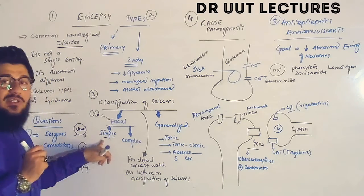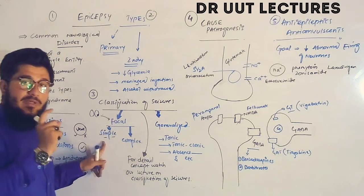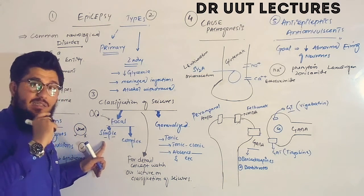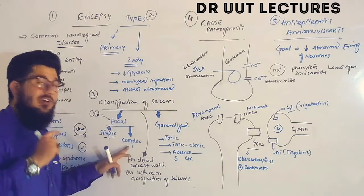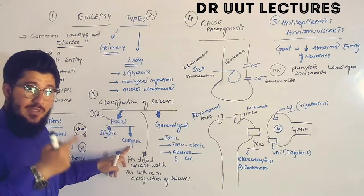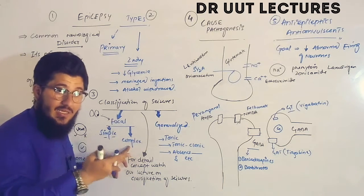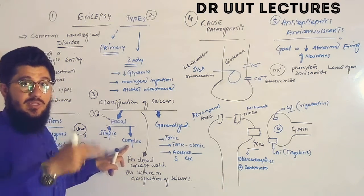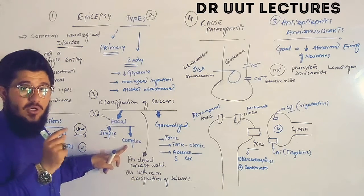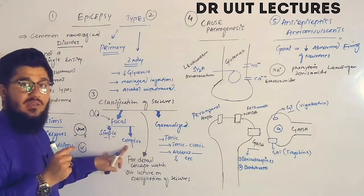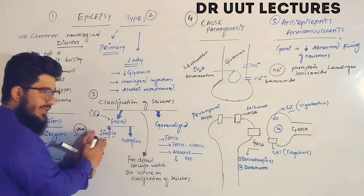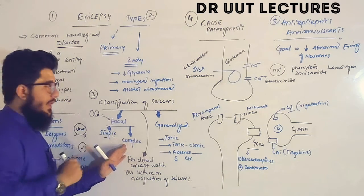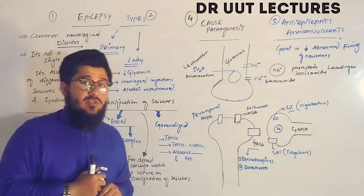In a simple focal seizure, the person undergoing an epileptic attack will maintain consciousness. In a complex focal seizure, the person may or may not remember what happened during the attack — there is an altered consciousness. So in simple focal seizures consciousness is maintained, while in complex focal seizures consciousness is altered.